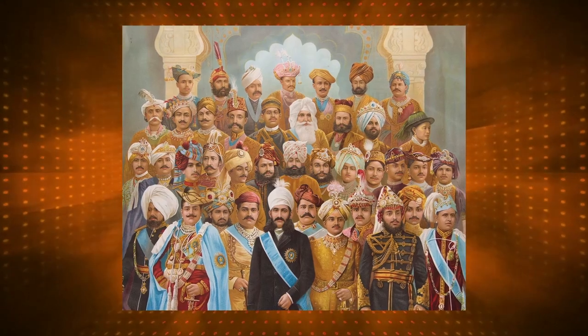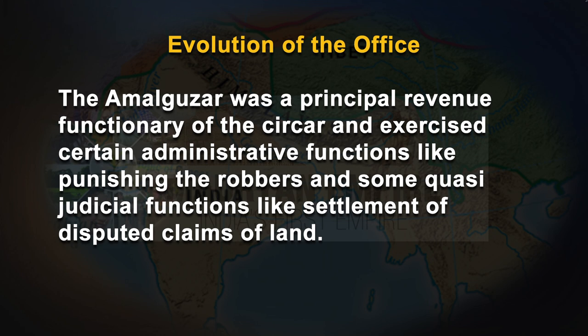They also commanded military force to maintain law and order in the Vaishya. The Mughal rulers followed the system of administration of Hindu kings. Under the Mughal system, the Sarkar — comparable to the modern district — had three officers: Amal Gauzer, Amir Jauzi, and Fawzdar. The Amal Gauzer was the principal revenue functionary of the Sarkar and exercised certain administrative functions like punishing robbers and some quasi-judicial functions like settlement of disputed land claims. However, during the Mughal period, the Fawzdar enjoyed a dominant position in the district administration. Thus, before the advent of the British, there were always territorial divisions and officers responsible for the realization of land revenue.